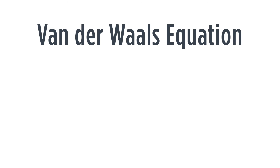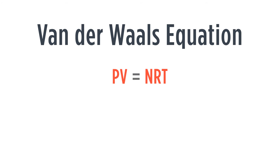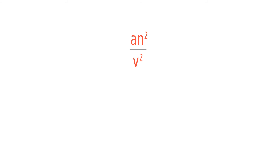So how do we deal with this? Well, van der Waals came up with van der Waals' equation, which takes the normal PV = nRT and puts in a couple of correction terms. The first term is P plus a constant A times the square of the number of moles divided by the volume squared, multiplied by the second term: volume minus the number of moles times a constant B, equals nRT. The two terms to focus on are AN² over V² and NB.